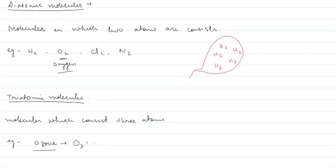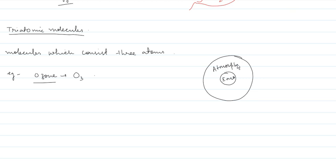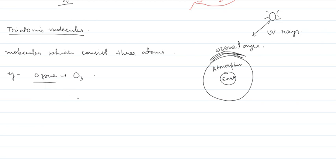Let us understand where the ozone layer is present. Above the earth, the atmosphere is present, and in the upper level of the atmosphere the ozone layer is found. The ozone layer protects us from the UV rays — ultraviolet rays — that come from the sun, which are very harmful. The ozone layer does not allow UV rays to enter. Ozone is O3, meaning three atoms of oxygen combine to form one molecule of ozone.